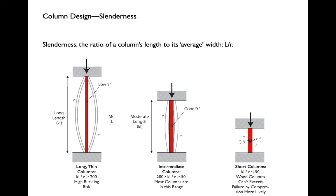Once we've figured out a column's radius of gyration — its average width — we can use this to establish what we call its slenderness ratio, which is really the key to column design. We use empirical data to understand where we start to get into buckling danger. We have three basic ways to design columns: when the height-to-width ratio is under 50, this is called a short column — a stout, hockey-puck-type column that if it fails, it will fail in compression. It's not tall or slender enough to buckle.